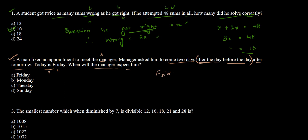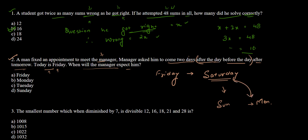Today is Friday, so tomorrow is Saturday. Two days after Saturday: Saturday → Sunday → Monday. Therefore the answer is Monday. Checking the options, option B says Monday — hence B is the correct answer.